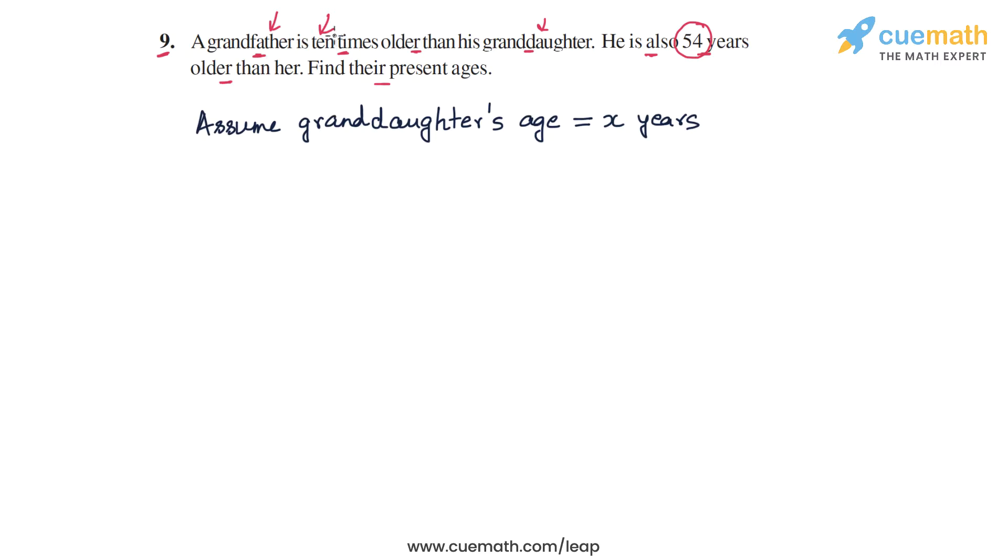Now in terms of x, it is easy to write the grandfather's age because we are told that the grandfather is 10 times older than the granddaughter. So the grandfather's age will simply be 10x years, because he is 10 times older than the granddaughter.